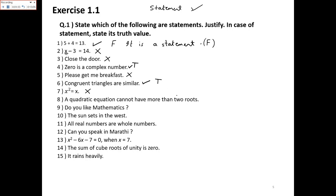'A quadratic equation cannot have more than two roots.' It is a statement and it is true. 'Do you like mathematics?' It is a question, not a statement. 'The sun sets in the west.' It is a statement; you will write the truth value on your own. 'All real numbers are whole numbers.' It is a statement. A tick mark means it is a statement, and some truth values are left for you to complete on your own.